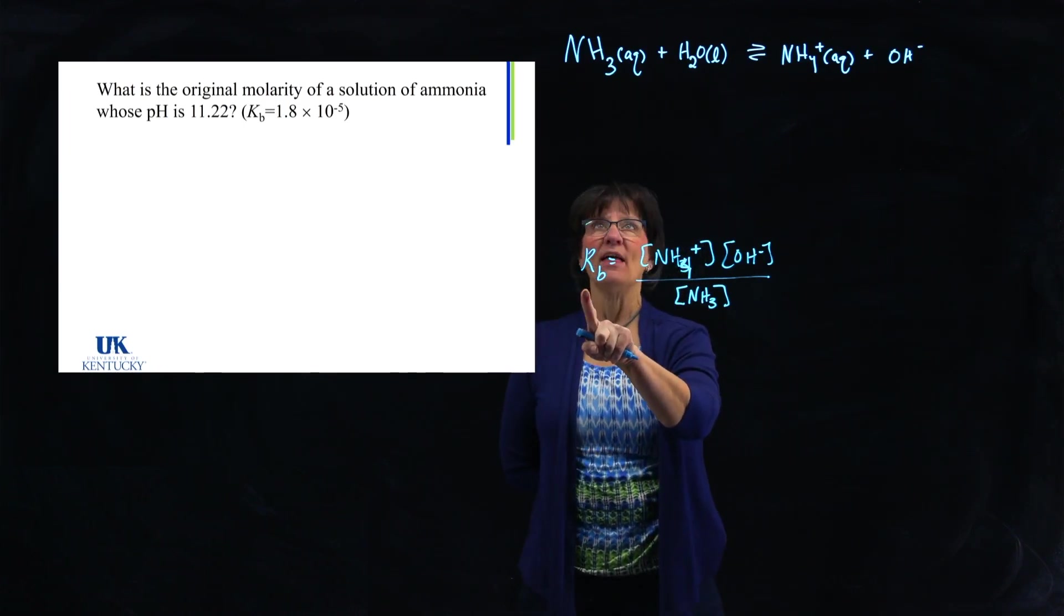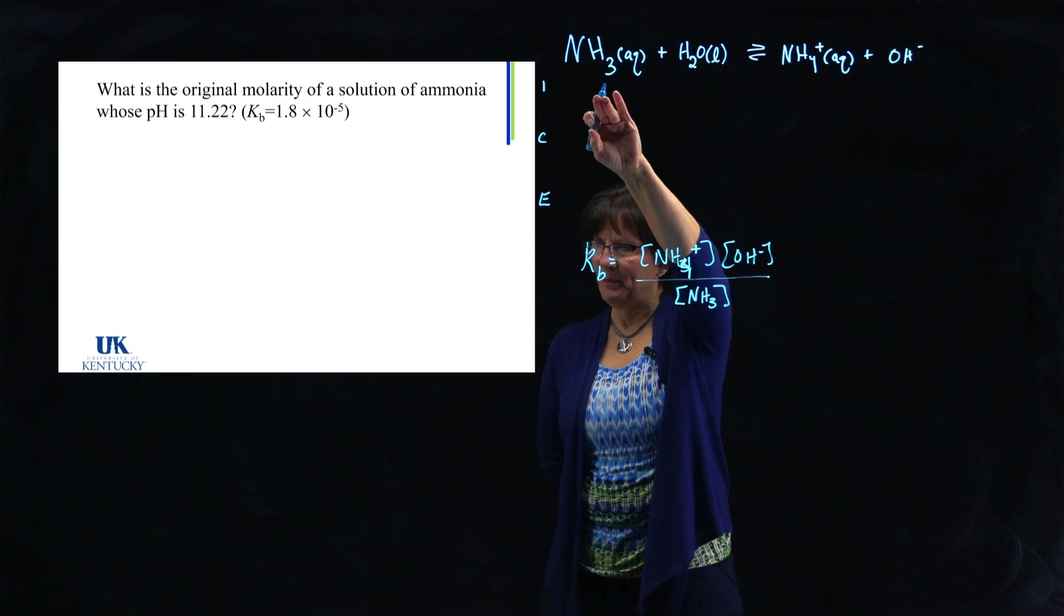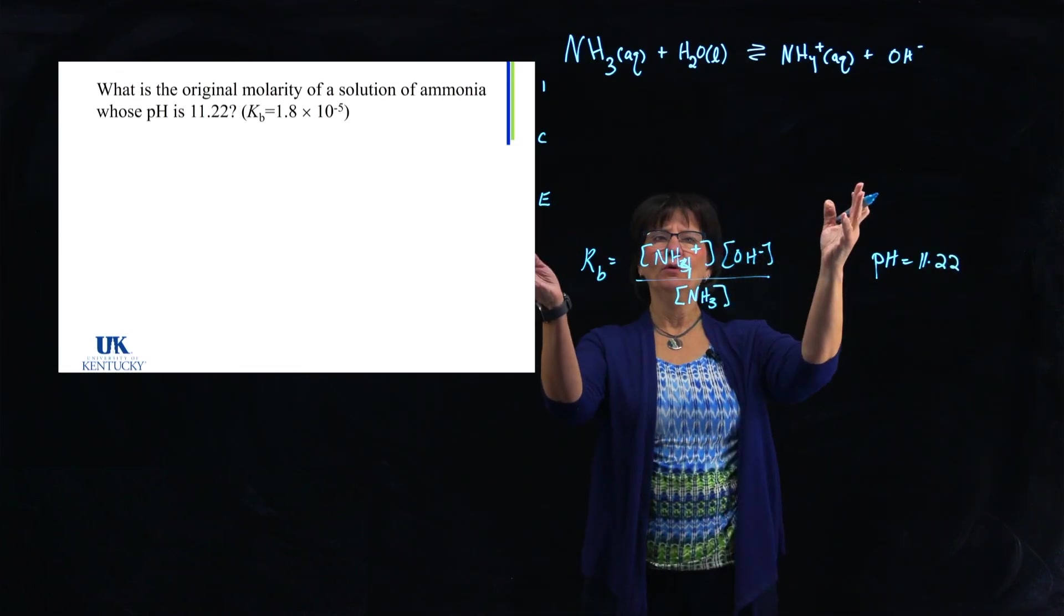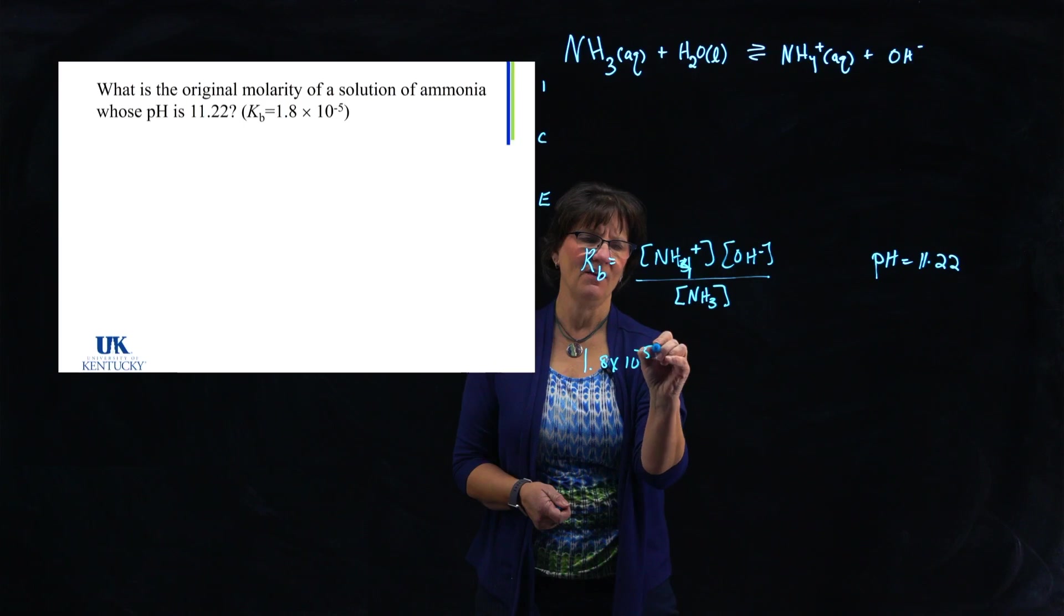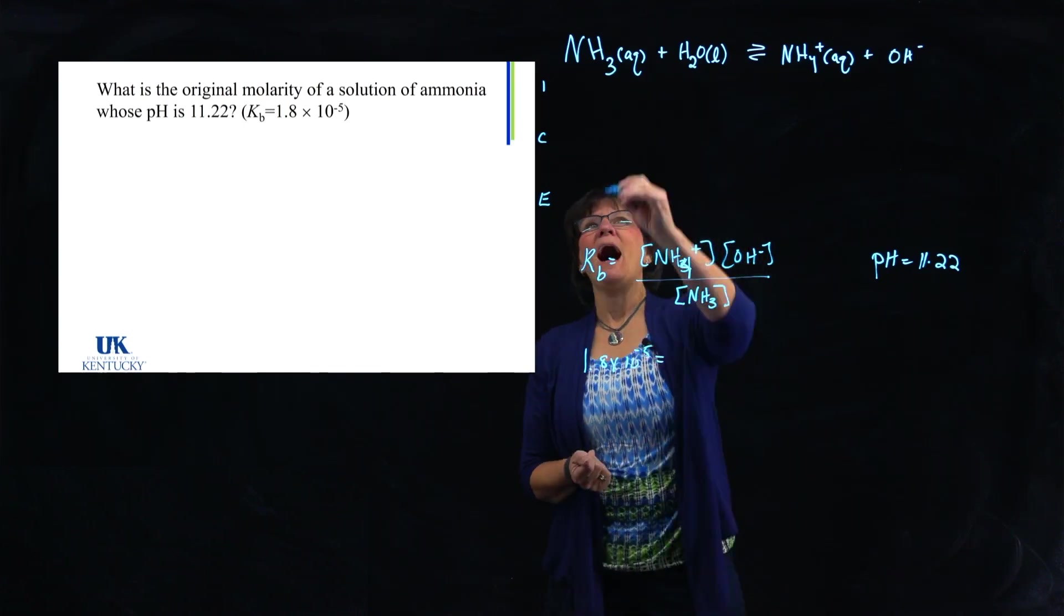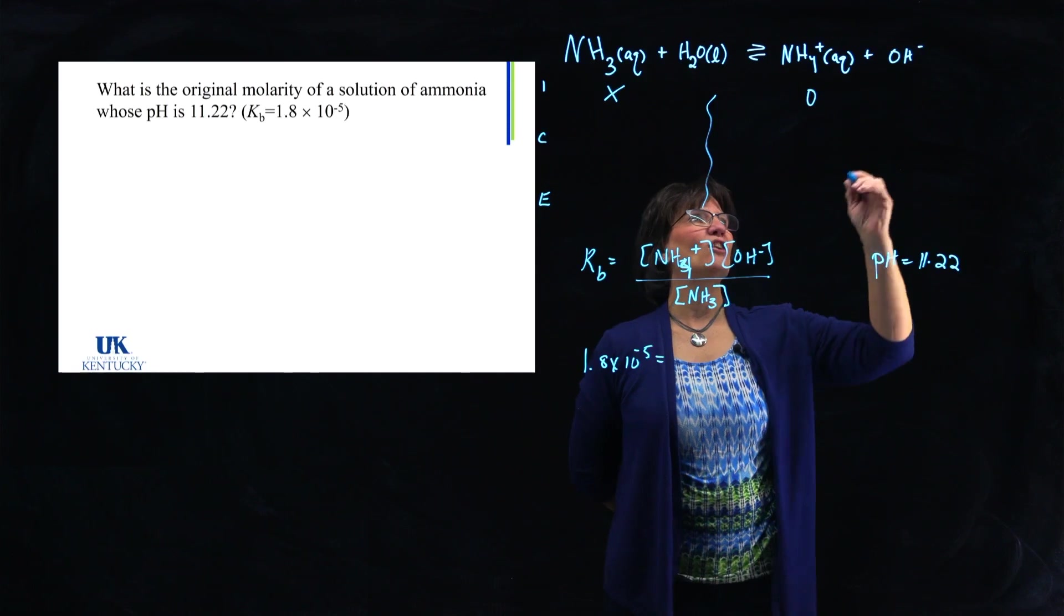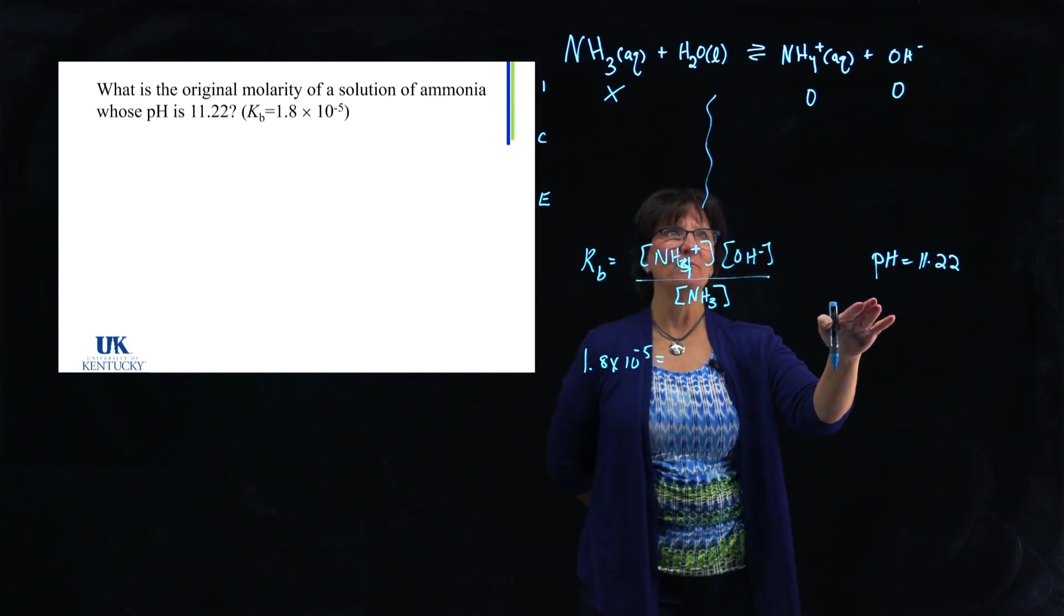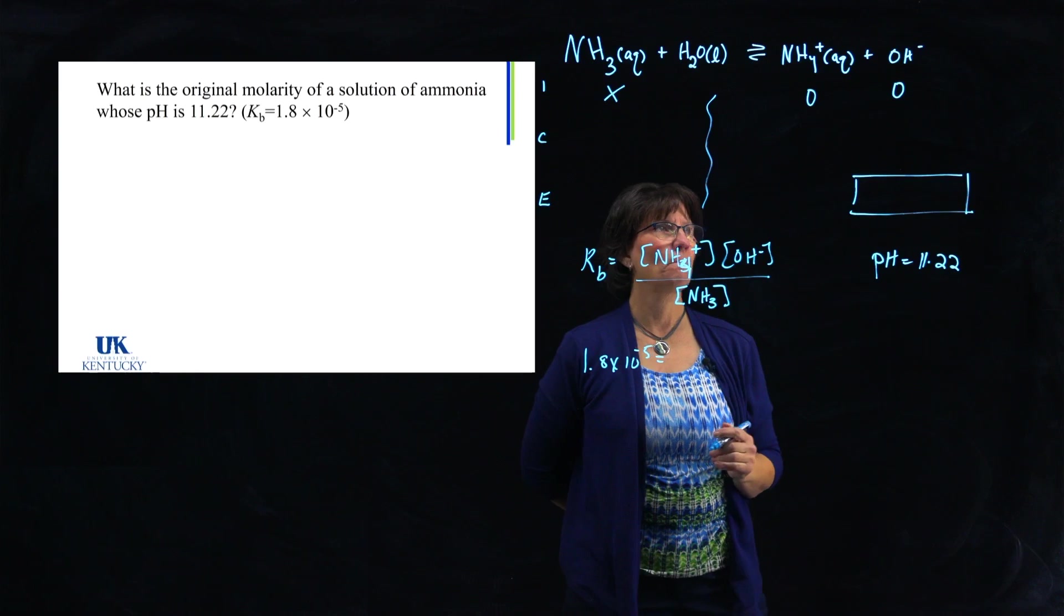Now, they gave me KB. They want to know the initial, so I'll do my ICE table. They want to know how much did you have to put in, in order to get a pH equal to 11.22. So somehow I want to use my table. I'm going to use my KB expression. I'm going to use the KB value they gave me, which was 1.8 times 10 to the minus 5, and I want to be able to get the initial concentration. So let's just plug in things that we know, solve for things that we don't know. I don't know how much I put in. That's really what I'm trying to solve for, so I'm going to call it X. Zero here before the reaction, essentially, or very nearly zero there.